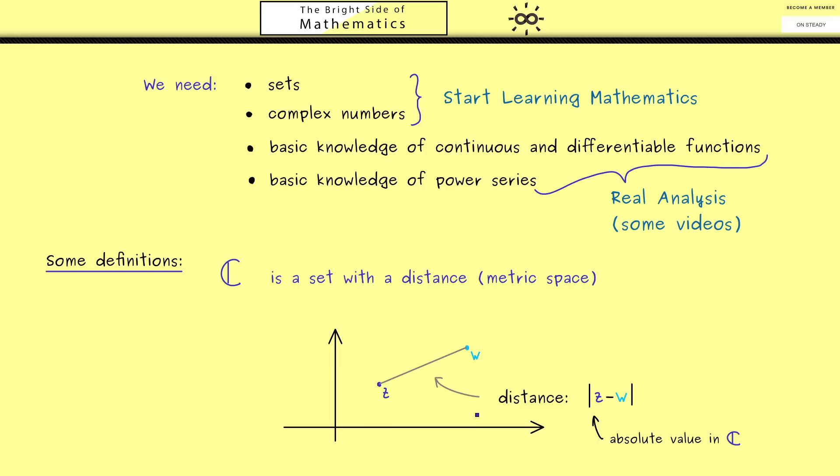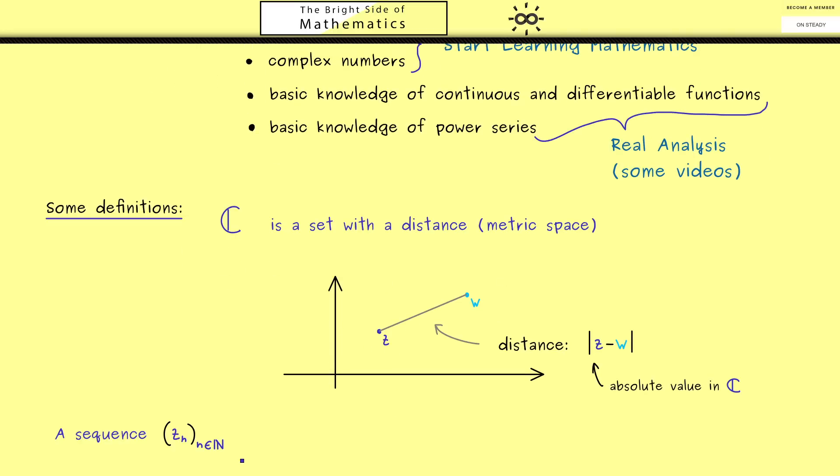What we need is the absolute value of the complex number z minus w. Such a notion of distance is important because with a distance we can say what a convergent sequence is, what limits are and so on. Otherwise, we wouldn't be able to say that a sequence gets closer and closer to a given point. We have to measure this closeness.